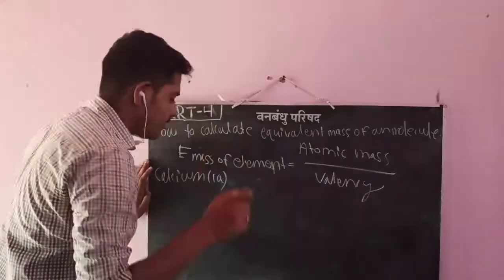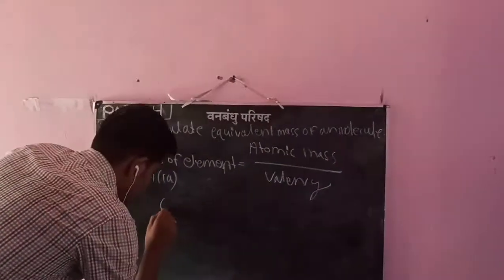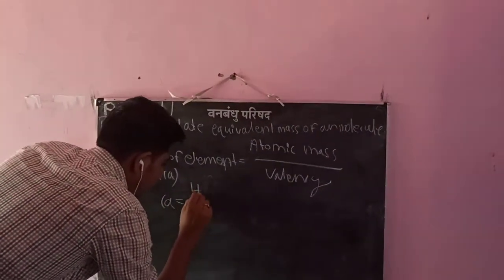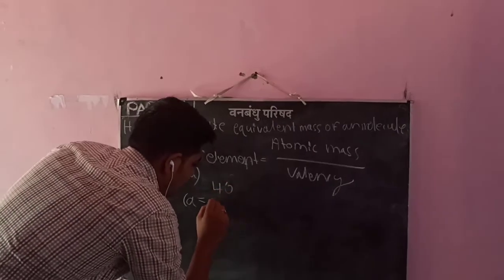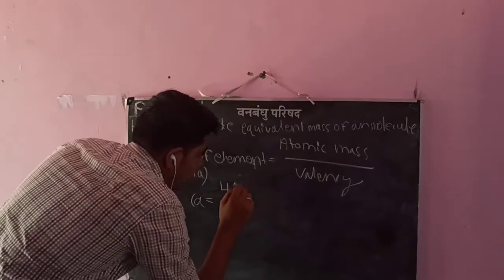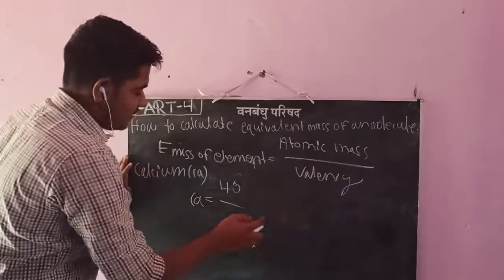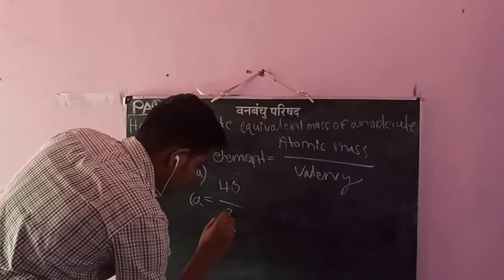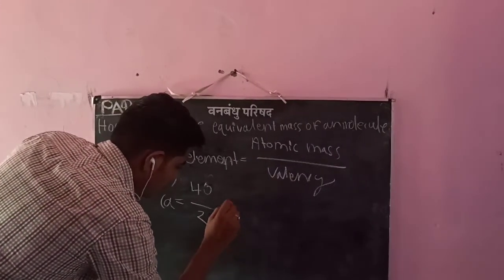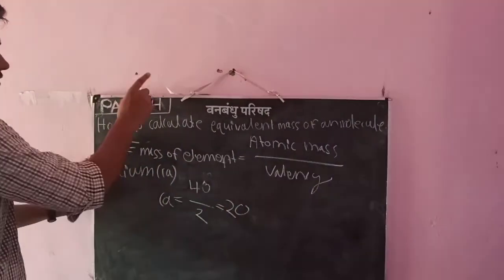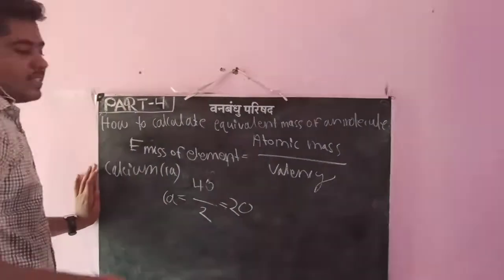For Calcium: atomic mass is 40, divided by valency which is 2. This gives us the Equivalent Mass of Calcium, which is 20.